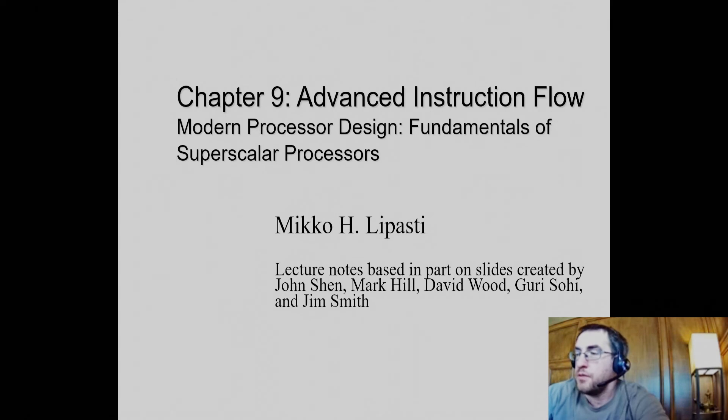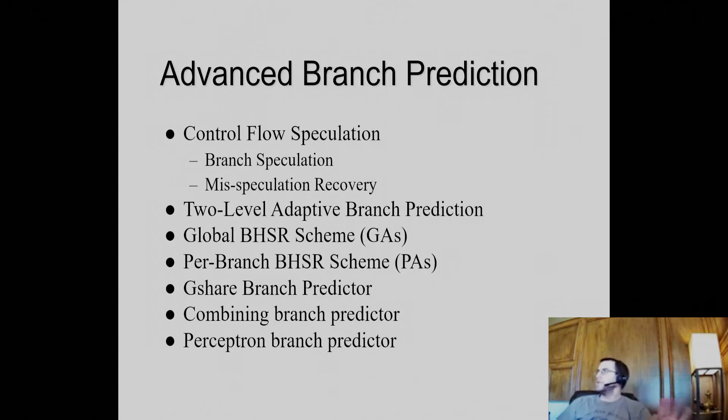Mainly, we covered chapters 1 through 4. We'll talk a little bit about chapter 9 here. Mispredicted branches are really, really bad. And therefore, branch prediction performance is really, really important.